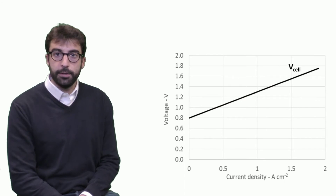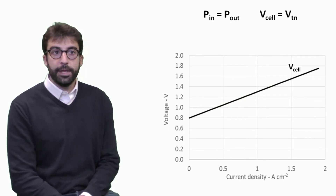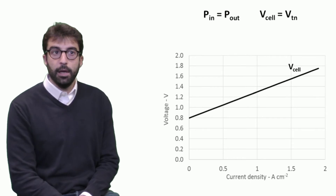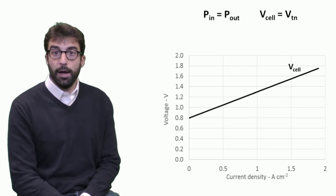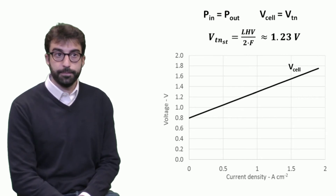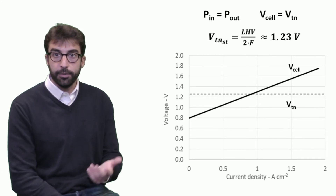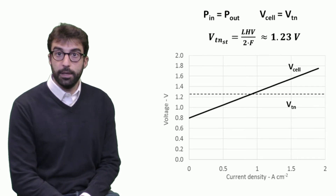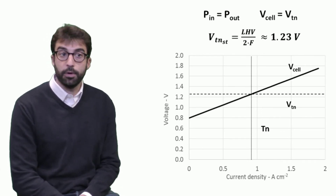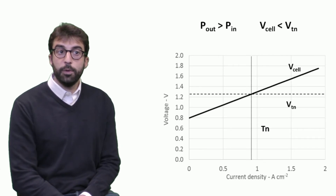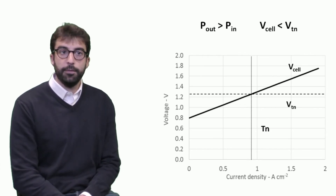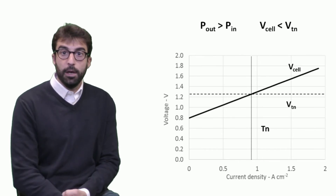Focusing on the cell voltage in relation to the thermoneutral voltage, we can see different scenarios. At thermoneutral, the outlet power and inlet power are the same — the cell operates at thermoneutral voltage, typically around 1.23 V. On our polarization curve, we can identify a corresponding thermoneutral current density. If the power output — the hydrogen produced — is higher than the power inlet, the cell operates below thermoneutral voltage. This is technically feasible.